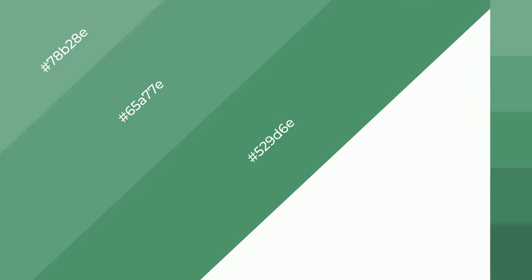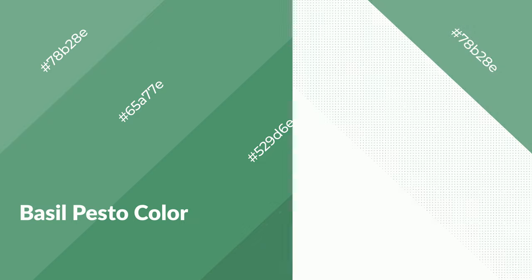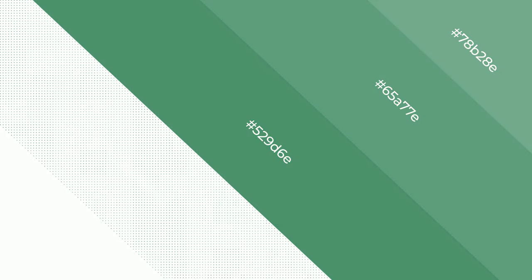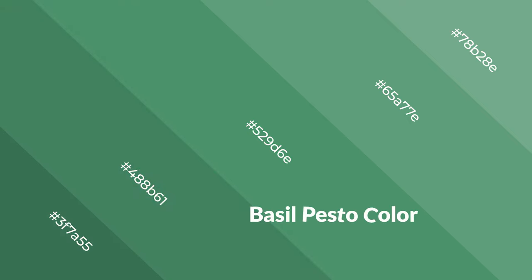Shades are used in patterns, 3D effects, and layers, and they create depth and drama. Basil pesto is a cool color and it emits calming, serene, soothing, refreshing, spacious, unwinding, peaceful, and relaxed emotions.